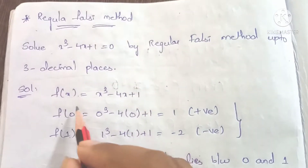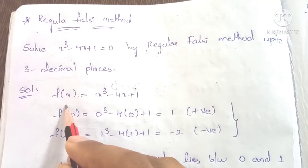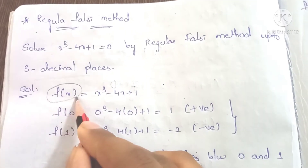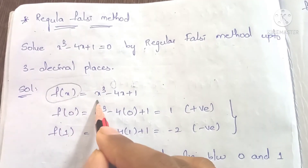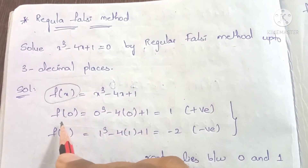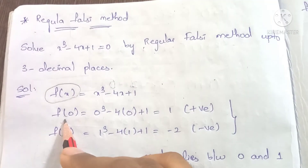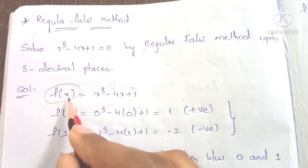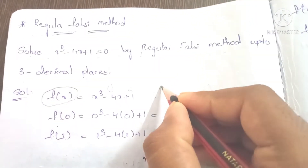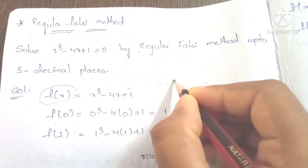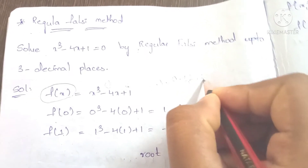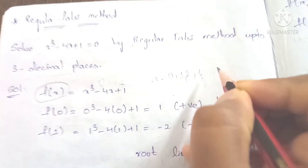First, we have f of x equal to x³ - 4x + 1. To find the first root, we add x values 0, 1, 2, 3 and so on.